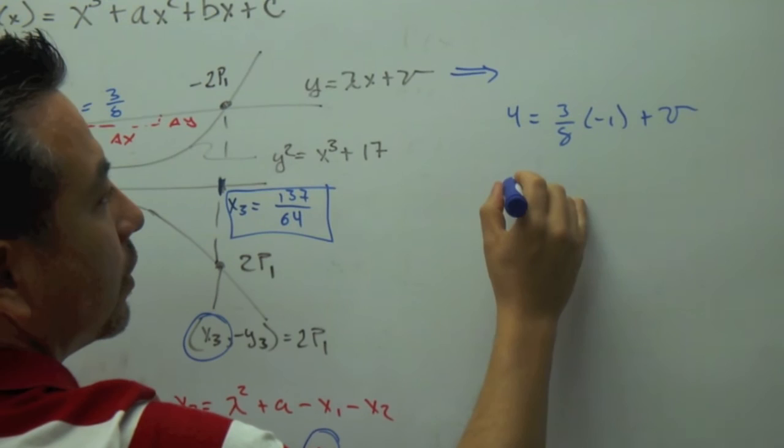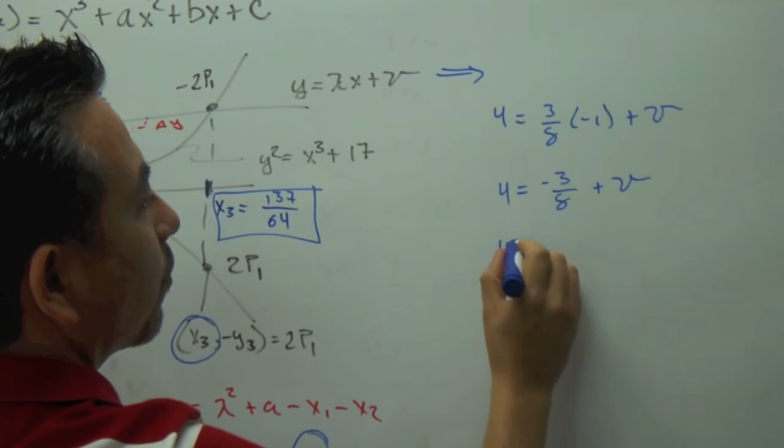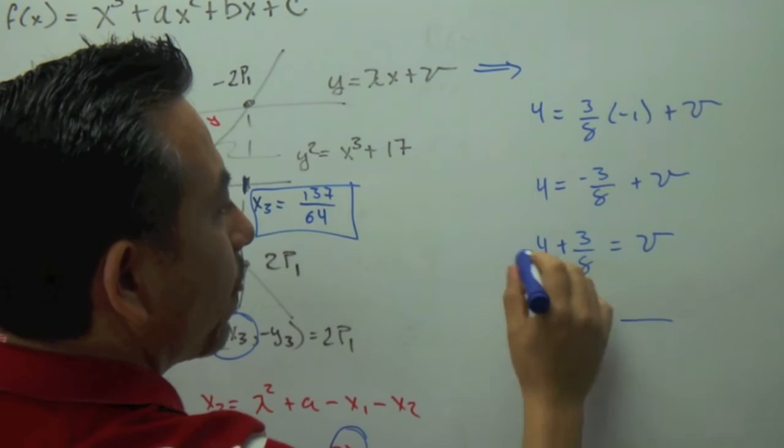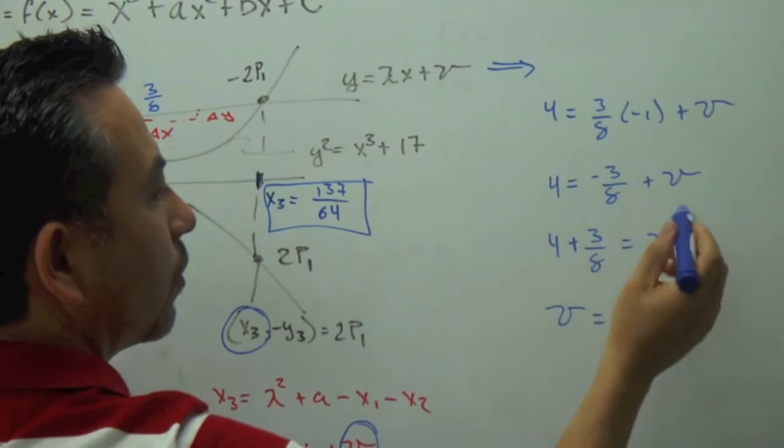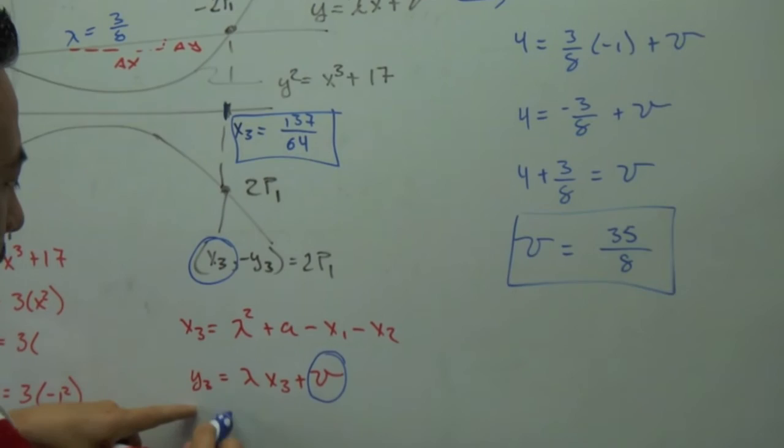So this is 4 equals negative 3 over 8 plus b. So it implies that 4 plus 3/8 equals b. So b equals 35/8. Now I know y, I know this, I know this, I know this.